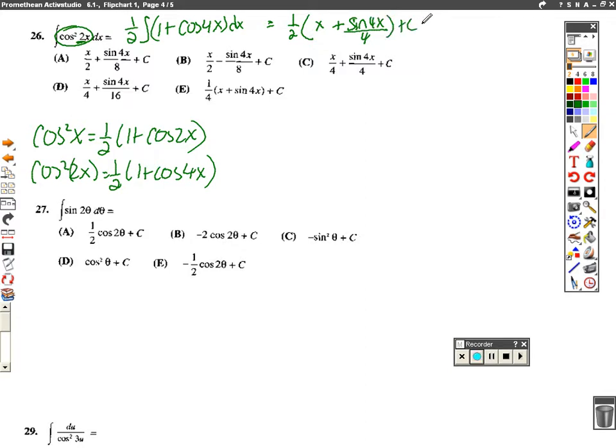And if we distribute that 1 half, we end up with x over 2 plus sine of 4x over 8 plus c.